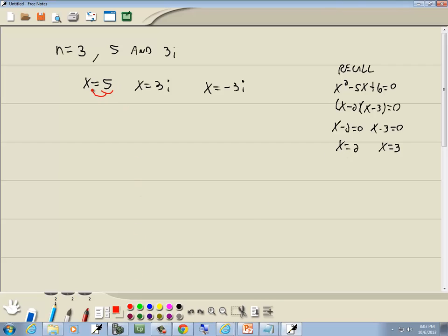So I'm going to take this 5, move it over with the x. Take 3i, move it over with the x. And take negative 3i, move it over with the x. So I'm going to have x minus 5 equals 0, x minus 3i equals 0, and x plus 3i equals 0.